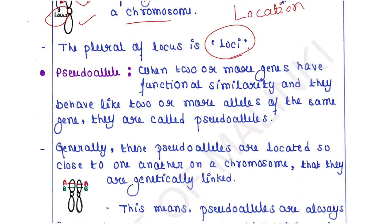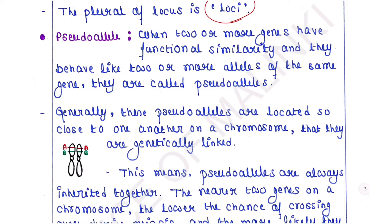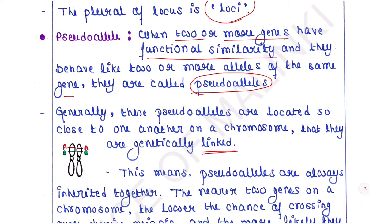Next are pseudo alleles. When two or more genes have functional similarity and behave like two or more alleles of the same gene, they are called pseudo alleles. Although they are different genes, they have functional similarity and therefore behave like alleles of the same gene. These pseudo alleles are located so close to one another on a chromosome that they are genetically linked.